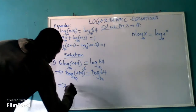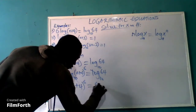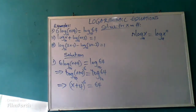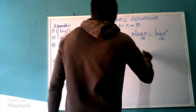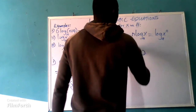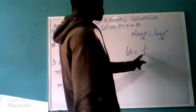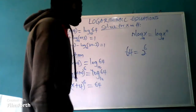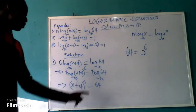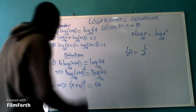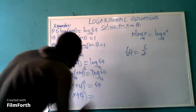So the logs cancel, and we are left with (x + 4) raised to the power 6 equal to 64. Now, 64 can be expressed as a power of 2 — 64 equals 2 raised to the power 6 — because I want to achieve the same power on both sides, just as this side has a power of 6.